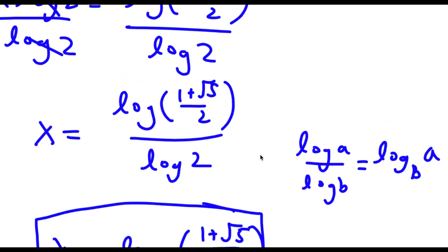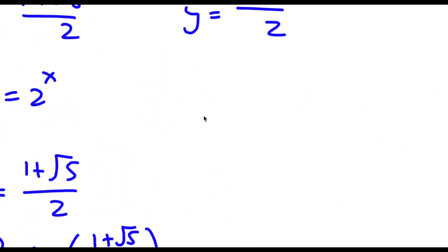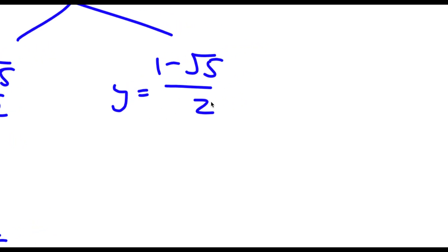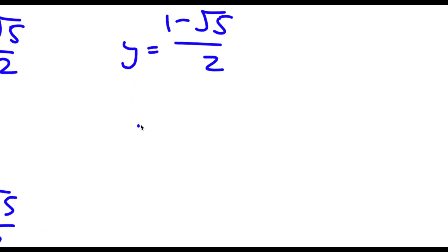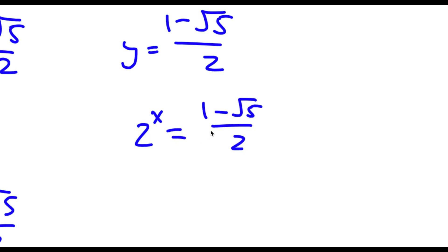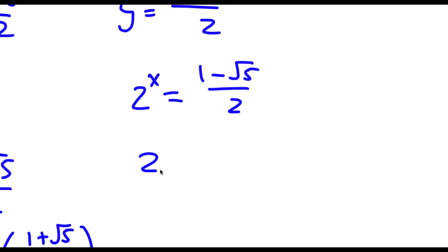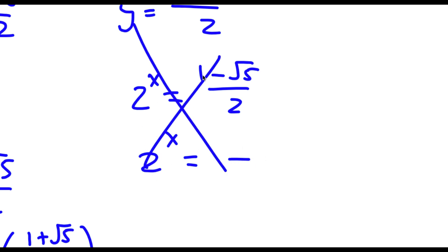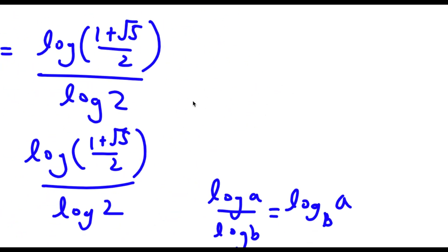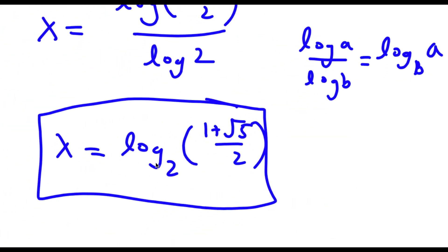Now remember there was another solution: y equals 1 minus the square root of 5 over 2. So that means 2 to the power of x is equal to 1 minus the square root of 5 over 2. However, 1 minus the square root of 5 is going to be negative, and this means 2 to the power of x would have to equal a negative number. You can't raise a positive number to a power and get a negative result, so this has no solution. Our only solution is x equals log base 2 of 1 plus the square root of 5 over 2.